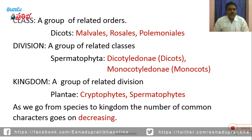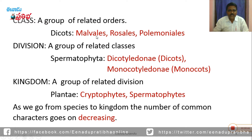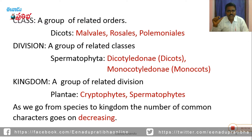Class: a group of related orders. For example, dicots have Malvales, Rosales, and Polemoniales. These orders having two cotyledons are kept under the class Dicots. Monocots are having a single cotyledon. For example, Poaceae and Orchidaceae — all those families have single cotyledons in their seeds and are grouped under the class Monocots.